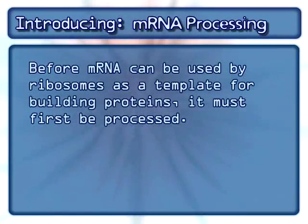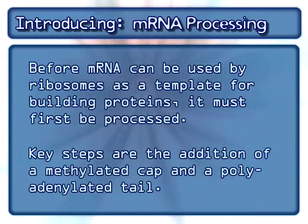Before mRNA can be used by ribosomes as a template for building proteins, it must first be processed. Key steps are the addition of a methylated cap and a polyadenylated tail.